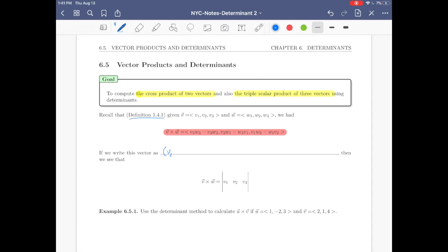If we write this vector as (v2w3 minus v3w2)i plus (v3w1 minus w3v1)j plus (v1w2 minus w1v2)k, then we see that v cross w can be seen as the determinant where the first row is i j k, the second row is v1 v2 v3, and the third row is w1 w2 w3.